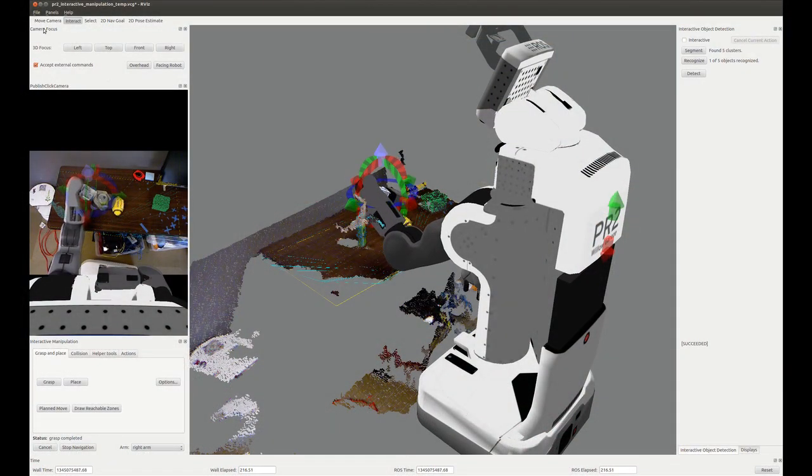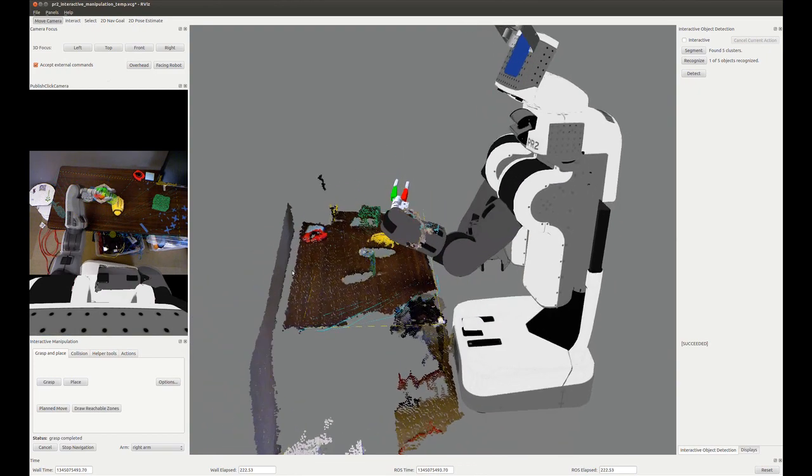The second step was to write a controller able to command the gripper to a desired finger gap while limiting the applied grip force to a specified value.